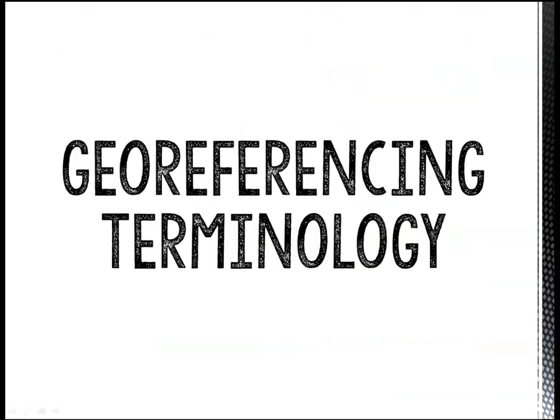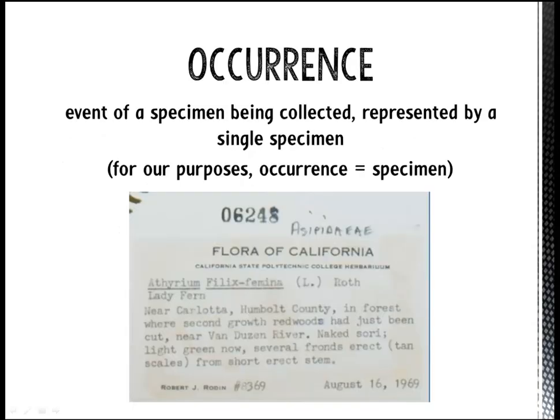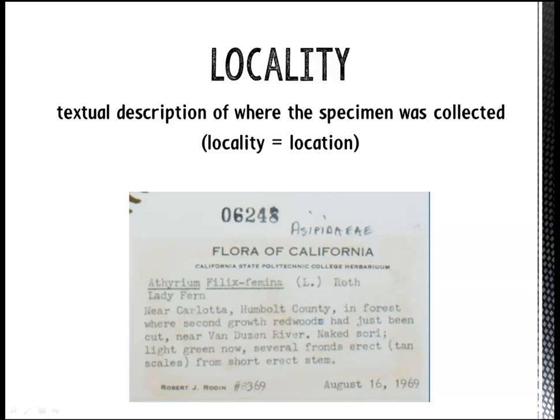Before we start georeferencing, let's define some terminology. Throughout this course, you may hear or see the word occurrence. For our purposes, you can think of an occurrence as a single herbarium specimen record. A specimen's locality is a textual description of where the specimen was collected. It can also be called the location.